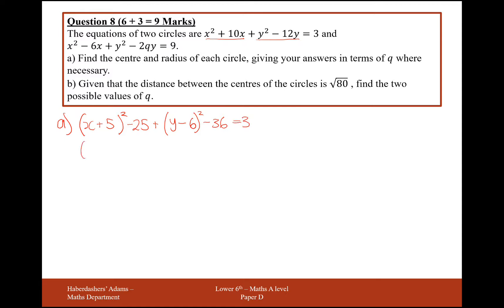So we take everything onto one side now to get the radius. So here we've already got the center of the circle is minus 5, 6 from the negatives inside these brackets here. 25 add 36 will give us 61, add onto 3, get 64. So we're going to have a center at minus 5, 6, and a radius of 8. Great, next one.